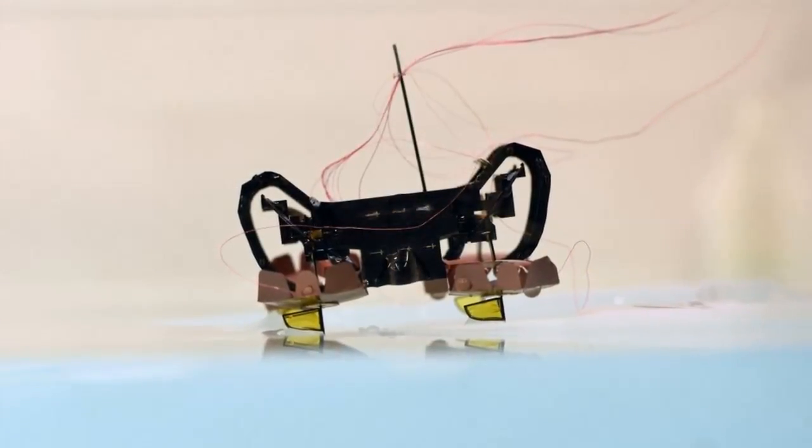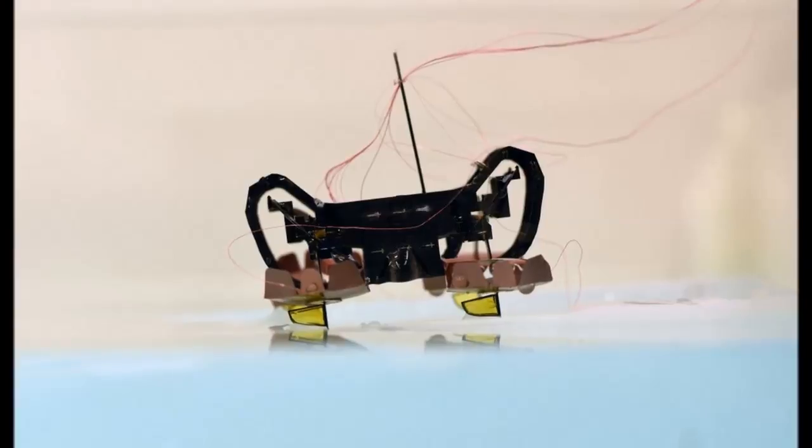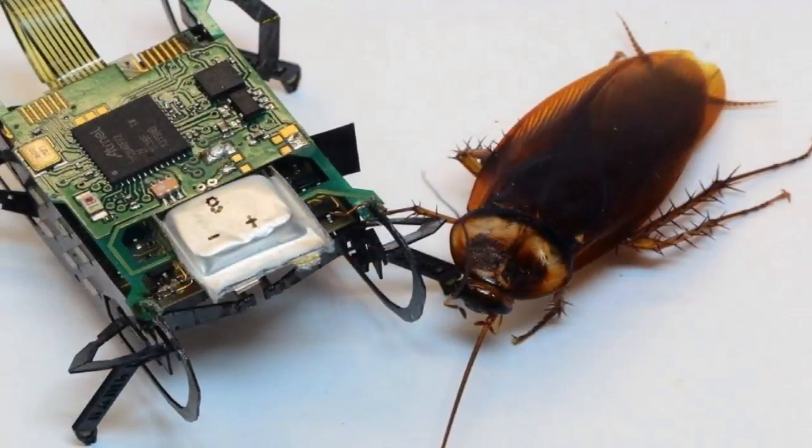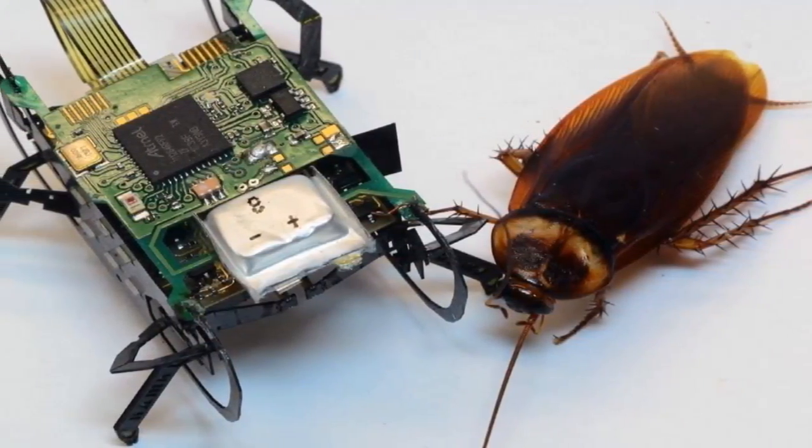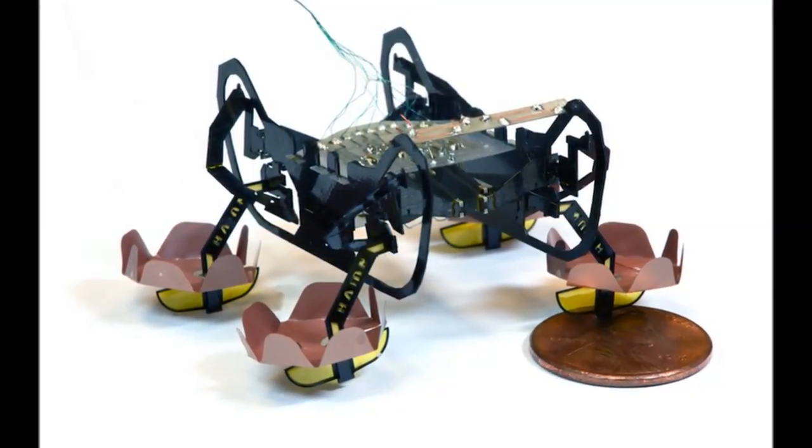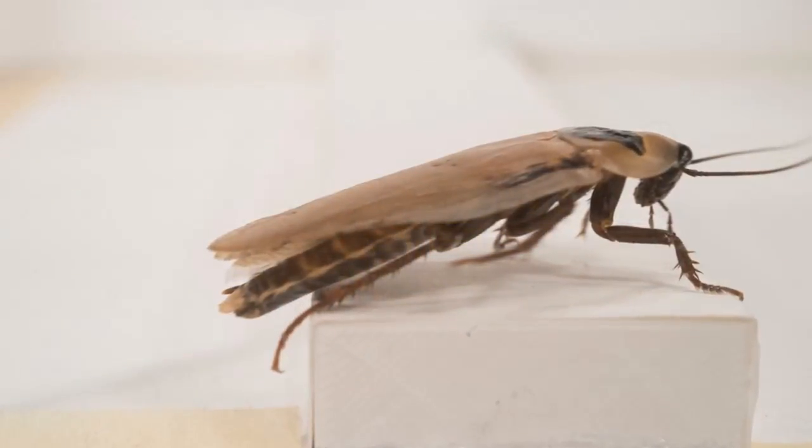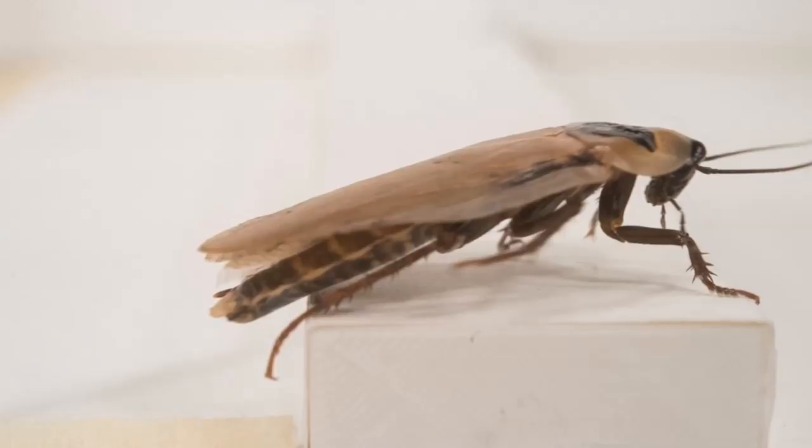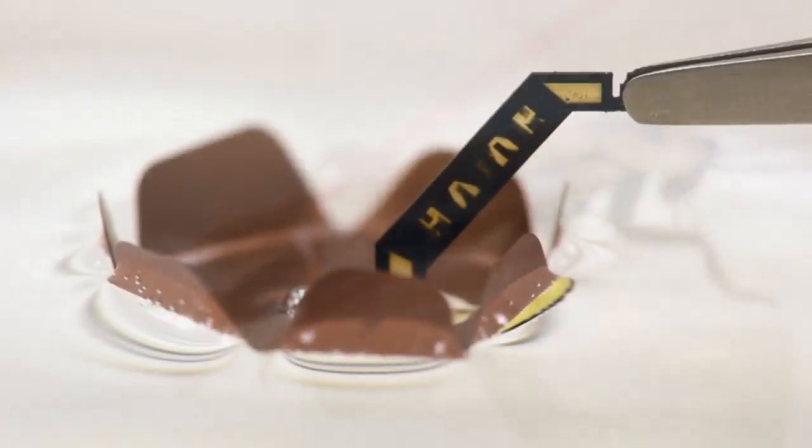This robot nicely illustrates some of the challenges and opportunities with small-scale robots. Shrinking brings opportunities for increased mobility, such as walking on the surface of water, but also challenges since the forces that we take for granted at larger scales can start to dominate at the size of an insect, says senior author Robert Wood.